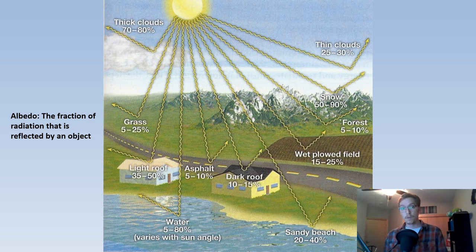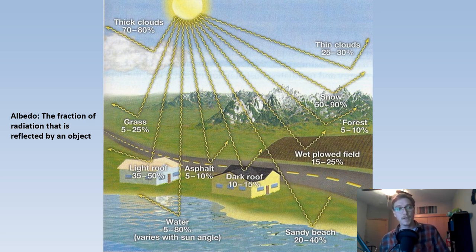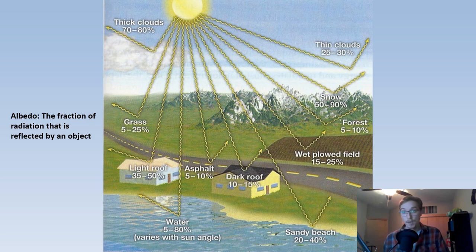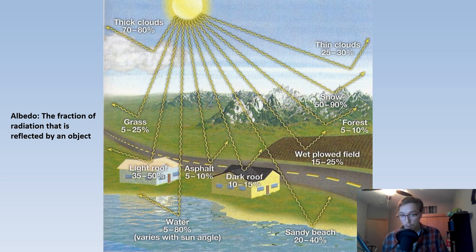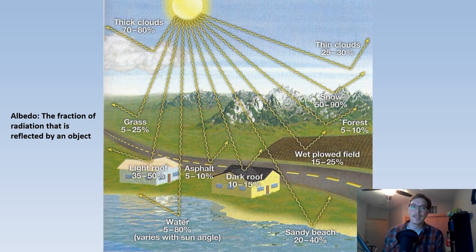The same is true for dark roofs. Water is highly variable: 5 to 80% is reflected. Thin clouds reflect 25 to 30% of incoming solar radiation. Snow is really good because it's white — 50 to 90% is reflected. Forests take a lot of that insolation in. Wet plowed fields, because they're darker in color, also absorb a lot. Grasses reflect 5 to 25%, and sandy beaches reflect 20 to 40%.